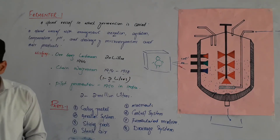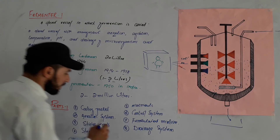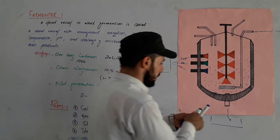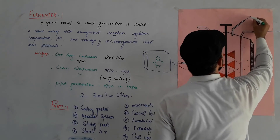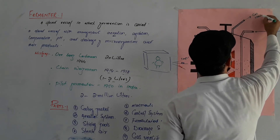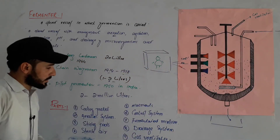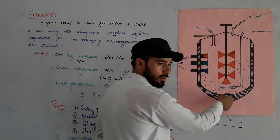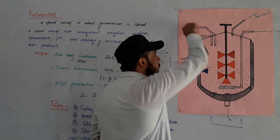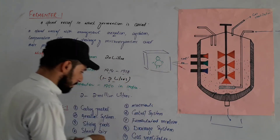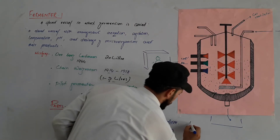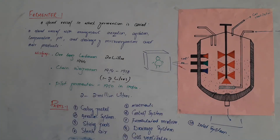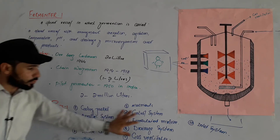There is also a gas ventilator. The gas ventilator releases gases produced during fermentation out of the fermenter. It also includes an inlet system. The inlet system is where reactants and nutrients are introduced into the fermenter, and the drainage system removes the final products.